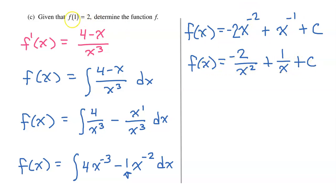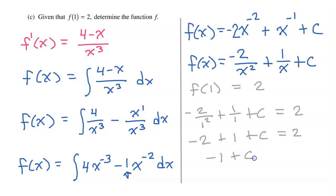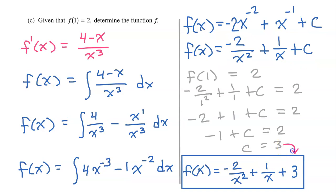Writing f without negative exponents, we have f equals negative two over x squared plus one over x plus C. They told us f at one equals two, so substituting: f at one equals negative two over one squared plus one over one plus C, which equals negative two plus one plus C. This simplifies to negative one plus C equals two. Adding one to both sides gives C equals three. Substituting three for C gives us our final function f.